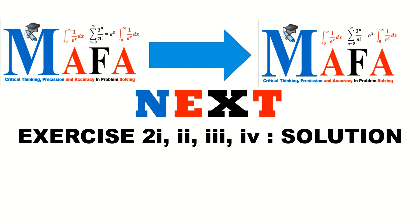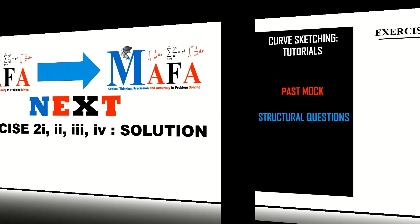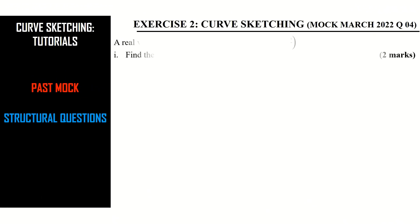We are going to begin by looking at the solutions to the first four parts — roman one, roman two, roman three, and roman four. So let's begin with roman one, which asks us to find the domain of definition of the function y = f(x).